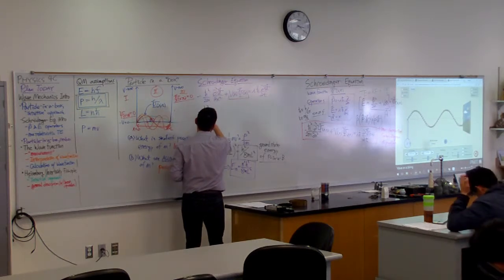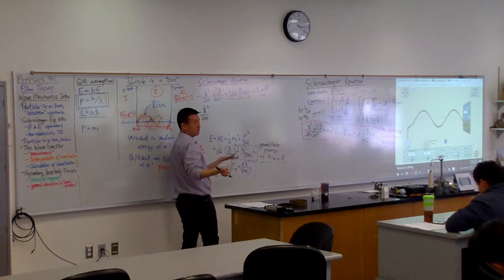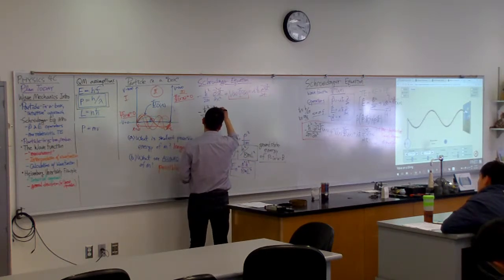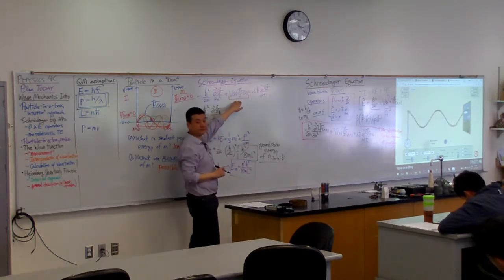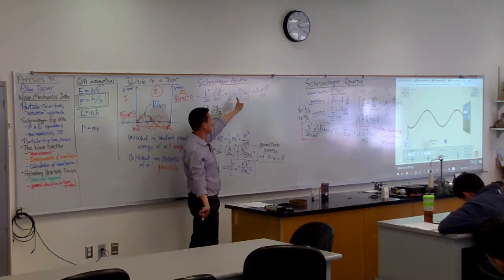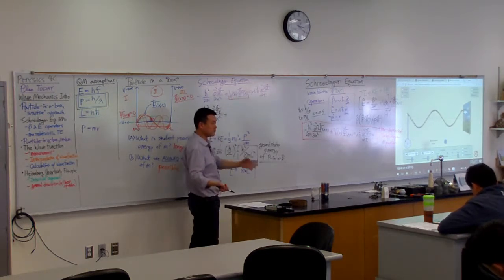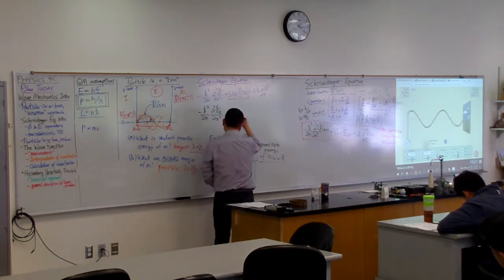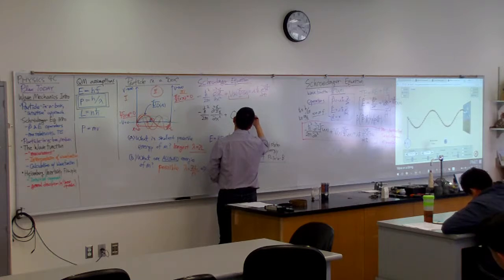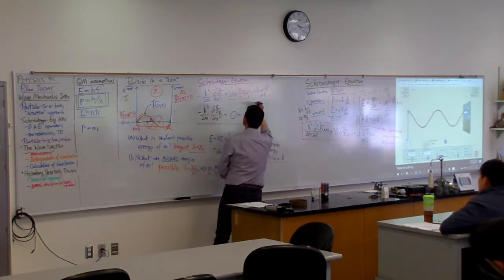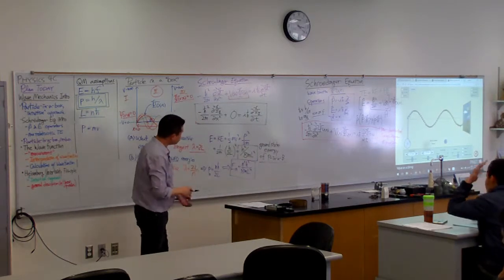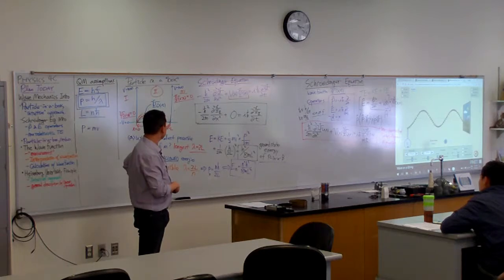I'll use subscript two as a reminder that this only applies to region two. So: minus ℏ² over 2m times the partial second derivative of ψ₂ with respect to x, plus — what is V(x) in region two? Zero. The potential is zero in this region. That equals iℏ times the partial derivative of ψ₂ with respect to time t. That is the Schrödinger equation in this region.